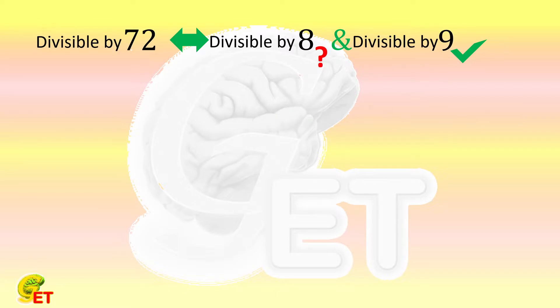A number being divisible by 8 is equivalent to that the three digit number consisting of the last three digits of this number is divisible by 8. We can discuss it step by step from being divisible by 2, being divisible by 4, and then to being divisible by 8.